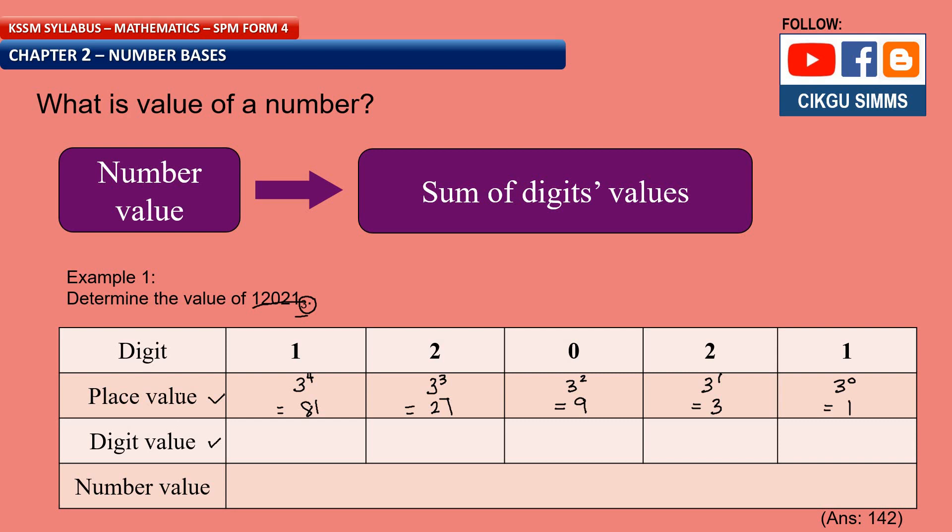And then we find the digit value. Digit value is the digit multiplied with the place value, right? So digit value 1 times 1 is 1. And then 2 times 3 is 6. 0 times 9 is 0. 2 times 27, 54. 1 times 81 is 81. So this is the digit value. Digit value for digit 1 is 81. Digit value for digit 2 is 54. So what is the number value? Number value means the value for all the digits, right?